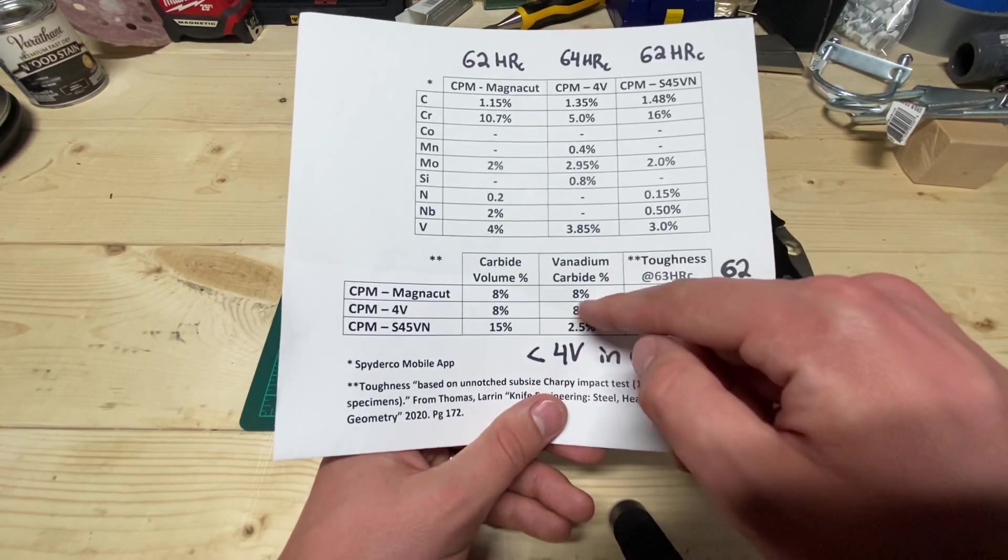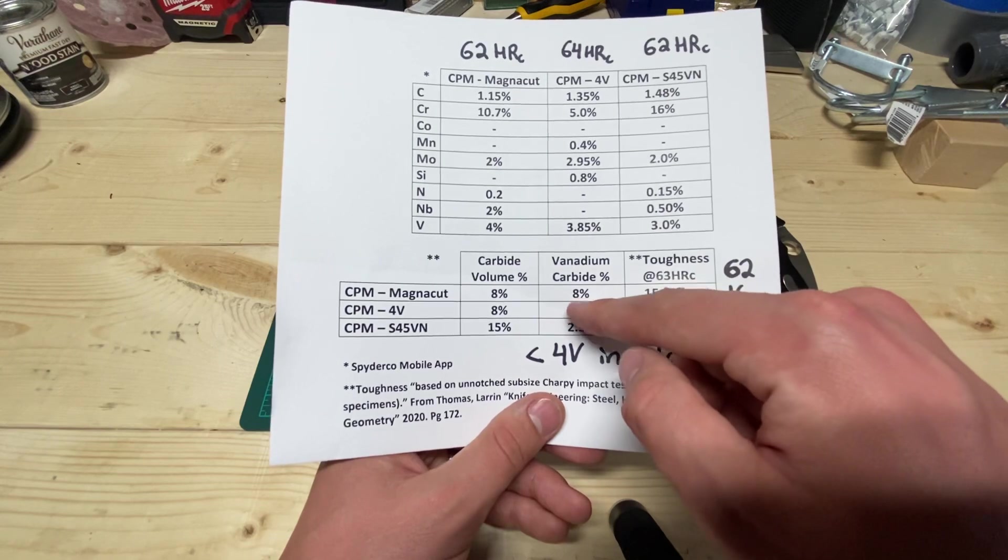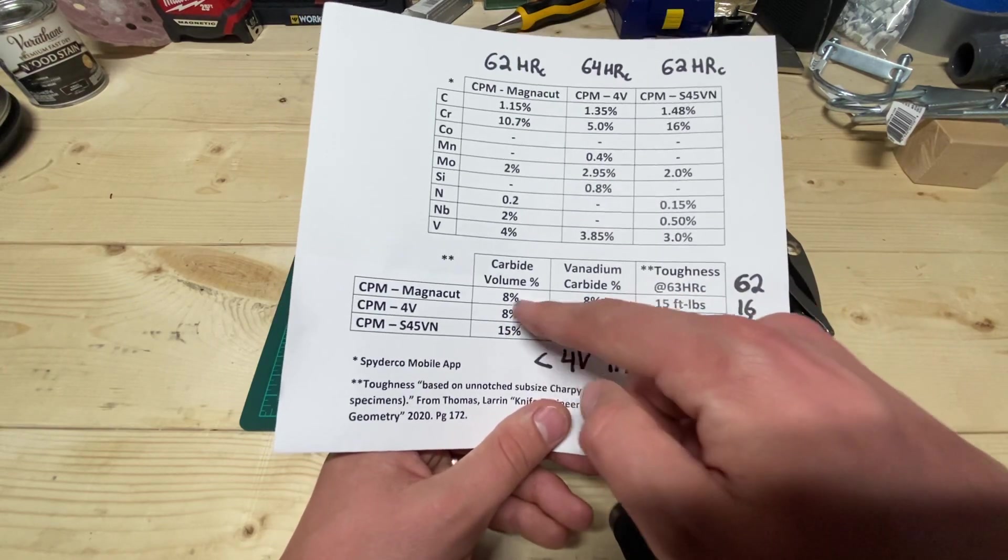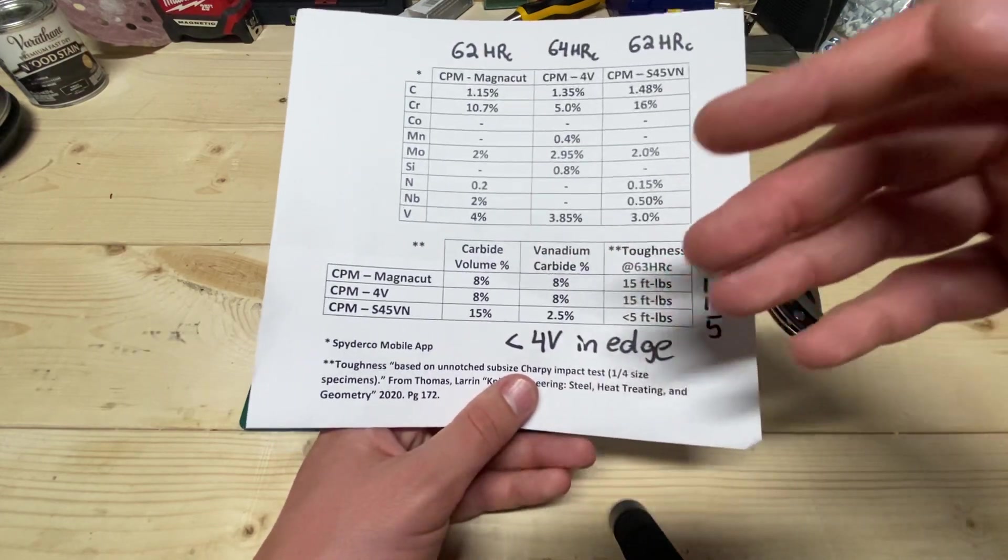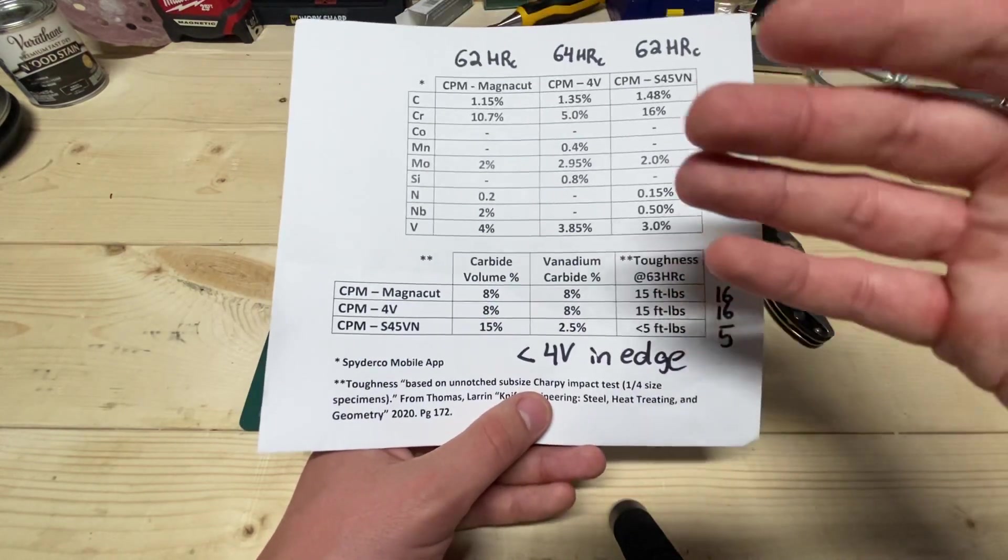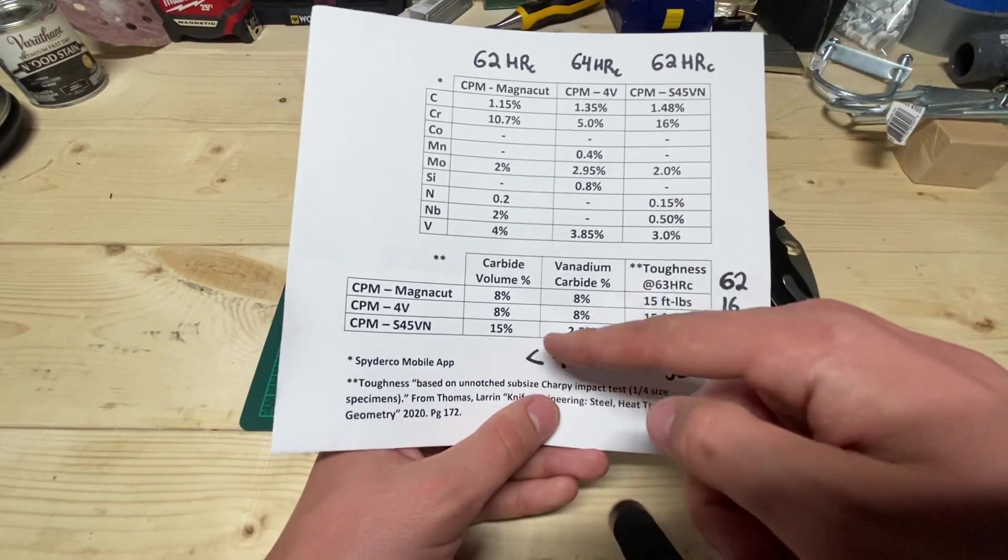And so I'm just trying to draw that comparison. So, and what that results in is even though MagnaCut has about half the carbide volume that S45VN does, its edge retention is nearing S45VN.